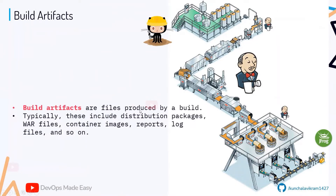Before understanding the need for Nexus or JFrog Artifactory, we should understand what an artifact is. Artifacts are files produced as a result of a build process. It can be a simple log file, a jar file, a text file, a zip file, a tarball, or container images. Anything that is a byproduct of your build process is a build artifact — including exe files, war files, container images, reports, and log files.